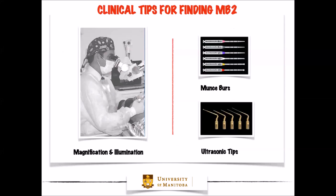Some clinical tips to find MV2 also include magnification and illumination, and I would of course talk about the microscope, which gives us both. It increases our magnification but also gives us illumination, which is extremely important for us to find the second mesobuccal canal.